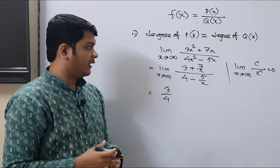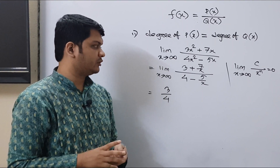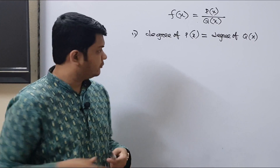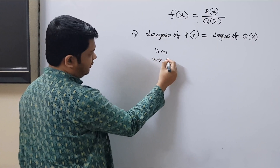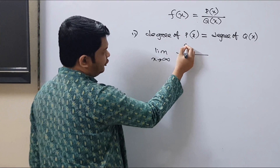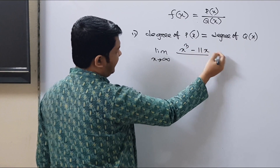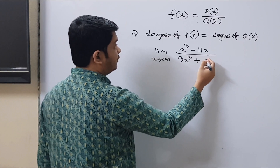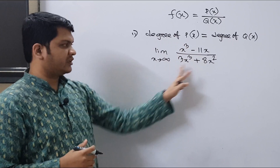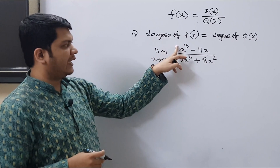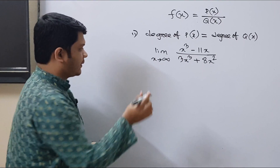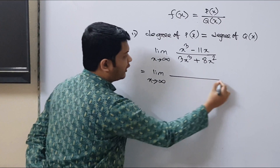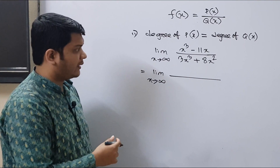Now let's solve a few more examples so that you have a better and clearer idea. Let's solve another example: limit as X tends to infinity of (x³ - 11x) divided by (3x³ + 8x²). Here also, the degree in the numerator and the degree in the denominator are equal, so we will now calculate the rest.